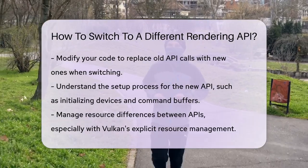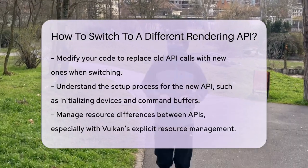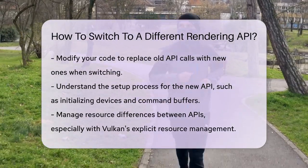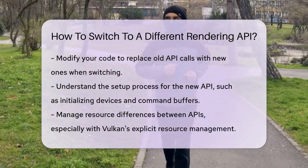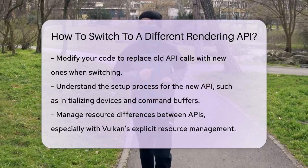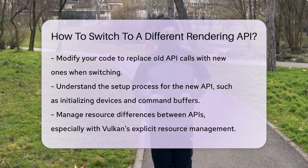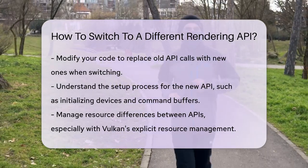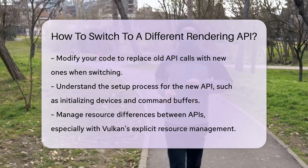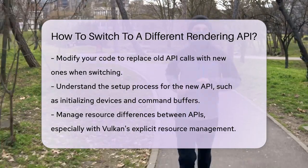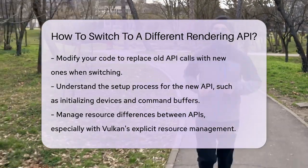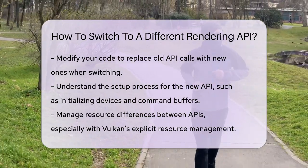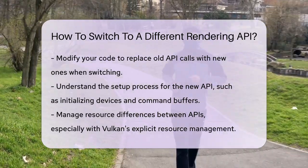Another important step is to handle the differences in how each API manages resources. For instance, Vulkan is very explicit about resource management, which can be more efficient but also more complex. You'll need to manage memory allocations, command lists, and other resources carefully to avoid performance issues.